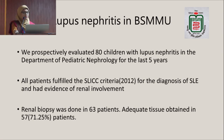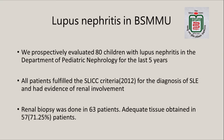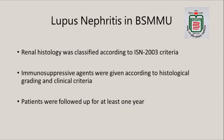I am sharing my experience here. We prospectively evaluated 80 children with lupus nephritis in our department over the last five years. All patients fulfilled the SLICC criteria 2012 for the diagnosis of SLE and had evidence of renal involvement. Renal biopsy was done in 63% and adequate tissue was obtained in 57 patients, that is 71.25%. Renal histology was classified according to ISN 2003 criteria. Immunosuppressive agents were given according to histological grading and clinical criteria, and patients were followed up for at least one year.